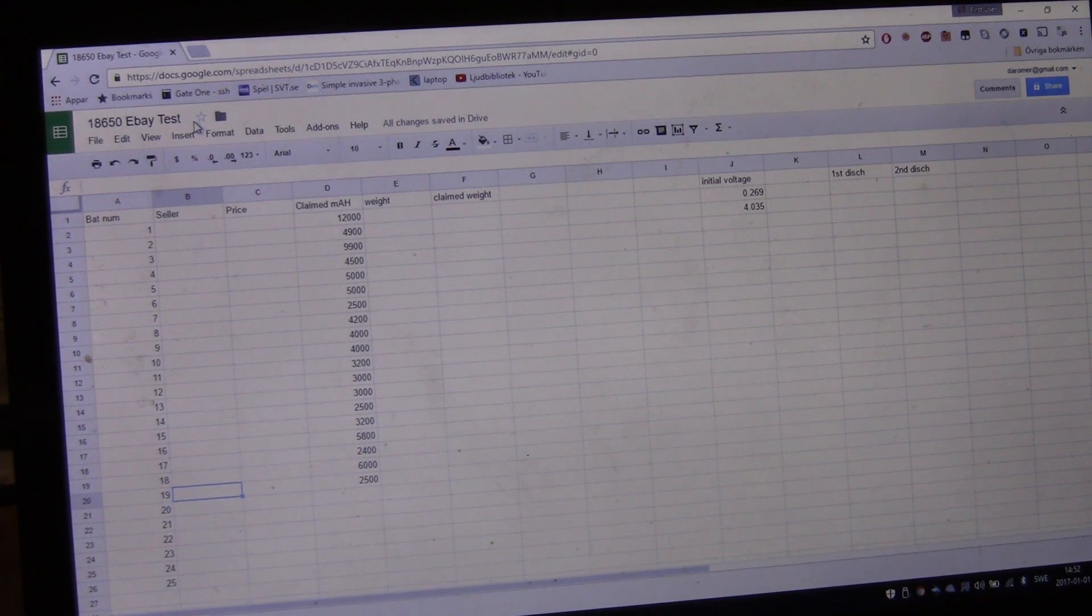The data I collect will be saved in a Google spreadsheet. In this spreadsheet I will collect the basic information like what cell it was, what price I paid for it, the claimed milliamps, the claimed weight and the actual weight of them. I will also be measuring the initial voltage when I get the cells, because some of them may be very low like I had one that was 0.269 volts. That's so low the charger won't even start charging it. All of that information will be in this document. I will also be collecting information like delivery time. You have to note that I live in Sweden. I will also be collecting information like if I get my money back from the seller, because for all the ones that aren't what they are claimed or even close to it, I will be claiming my money back.